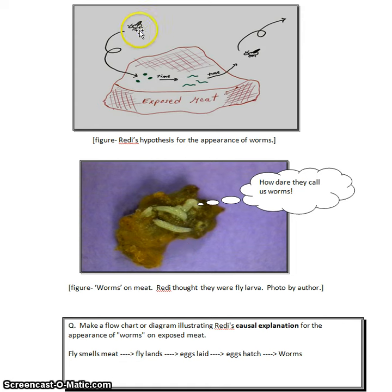And so his idea can be seen up here in this diagram that flies were landing on the meat, the females were laying eggs, the eggs were hatching into larvae, and then in time, those larvae would metamorphose into adult flies.